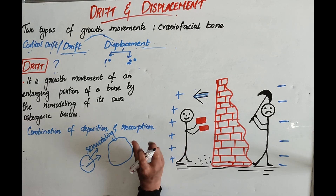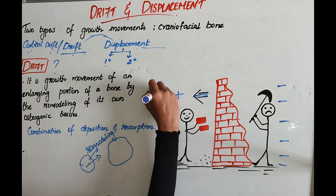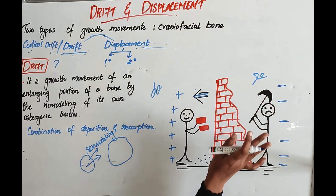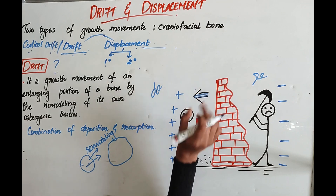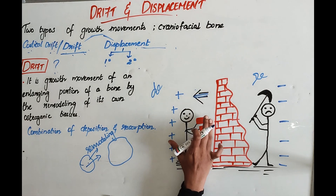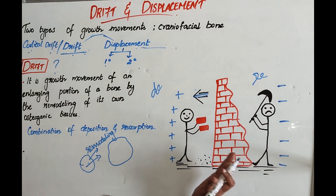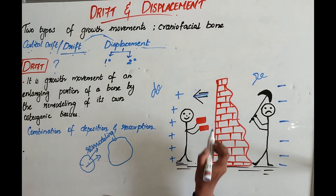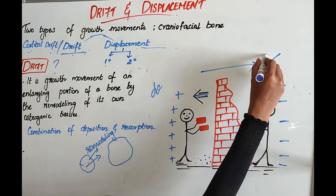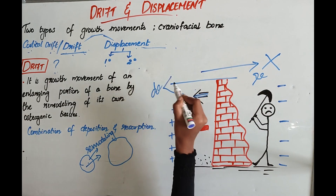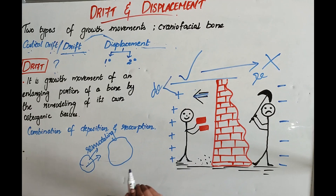Here, two events will be taking place: bone deposition and bone resorption. Considering this as the bone, deposition takes place in one direction and resorption in the opposite direction. The bone will not physically move, but drift will be taking place — that is, growth movement will occur in the direction of bone deposition.